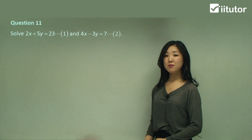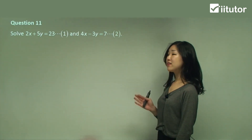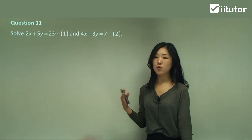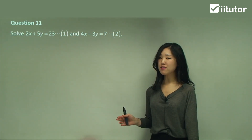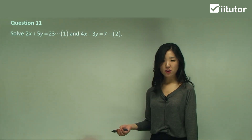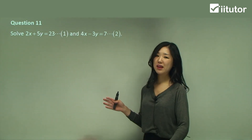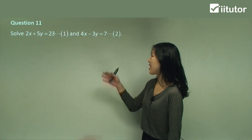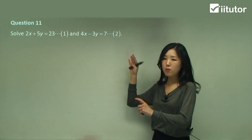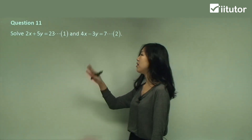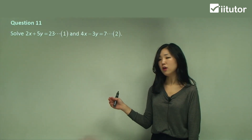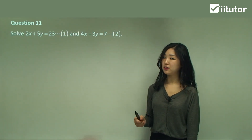Question 11 is a little different. Both equations have no subject, so we'd have to change one. But I'm not going to make x or y fully the subject — because if I did, it would involve fractions. Instead I'm going to make 2x the subject in equation one by moving the 5y over. So 2x equals negative 5y plus 23.